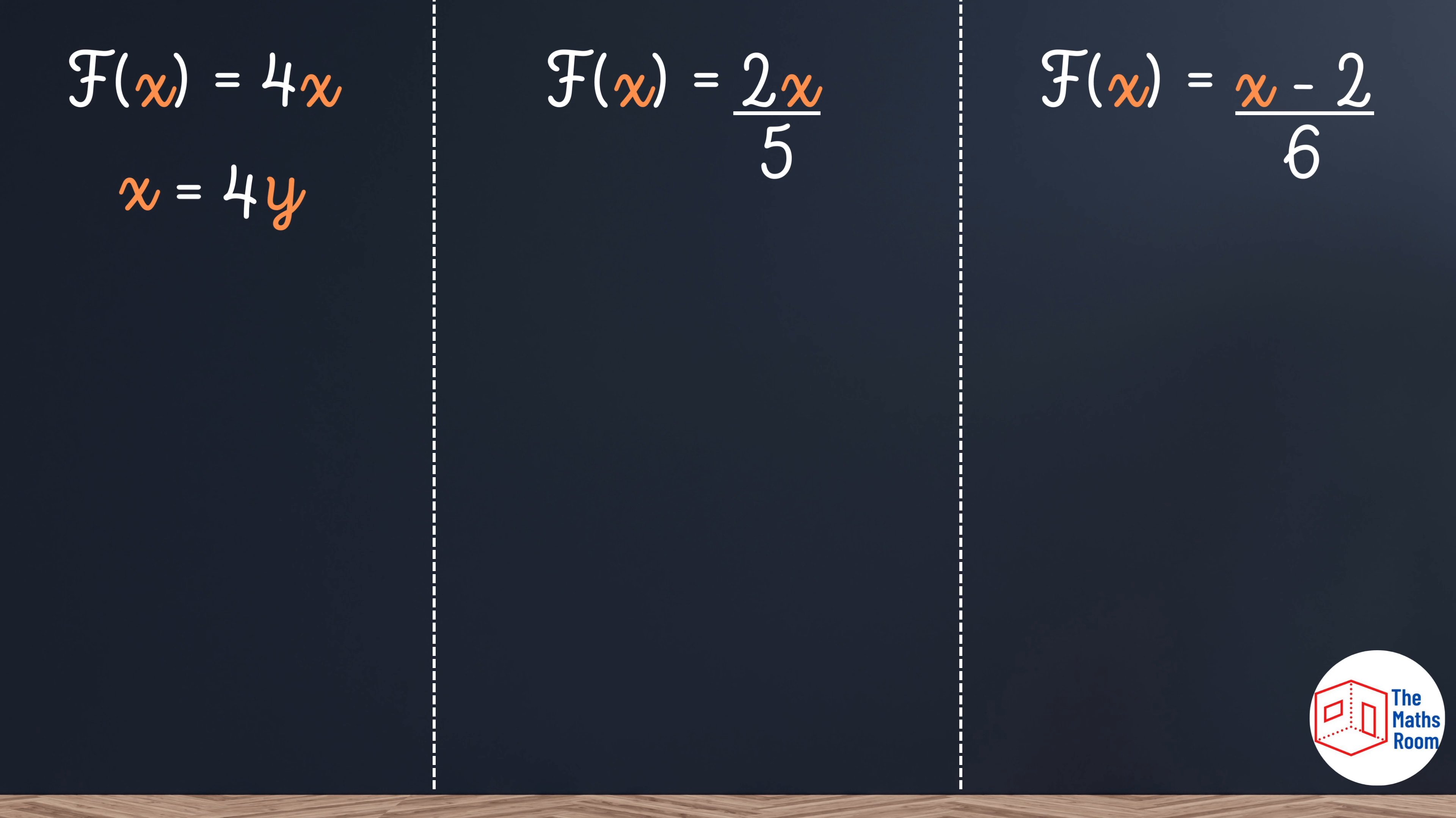Having a look at the first equation our first step was to switch the f of x to be a y and switch the x and the y position. So we've done that all in one go. Getting rid of the 4 we need to divide both sides by 4 which results in x over 4. So our inverse function is x over 4.